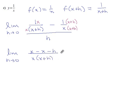And instead of dividing by h, I'm going to do that thing where I put 1 over h instead. Now, these x's cancel, so we're left with negative h over x, x plus h times 1 over h.